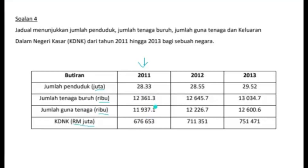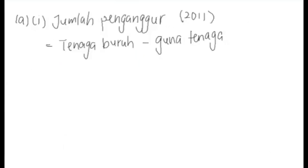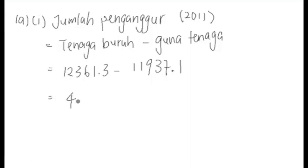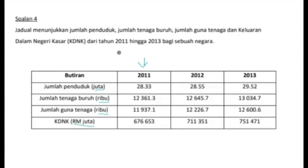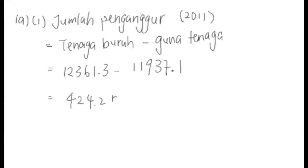Jadi sekarang Miss akan masukkan data ini ke dalam rumus kita. Jawapannya 424.2 - tengok semula jadual dia, unit dia ribu orang. Sebab penganggur itu memang orang. Jadi memang kita kena tulis 424.2 ribu orang. Itu hanya pengiraan bagi tahun 2011 sahaja.